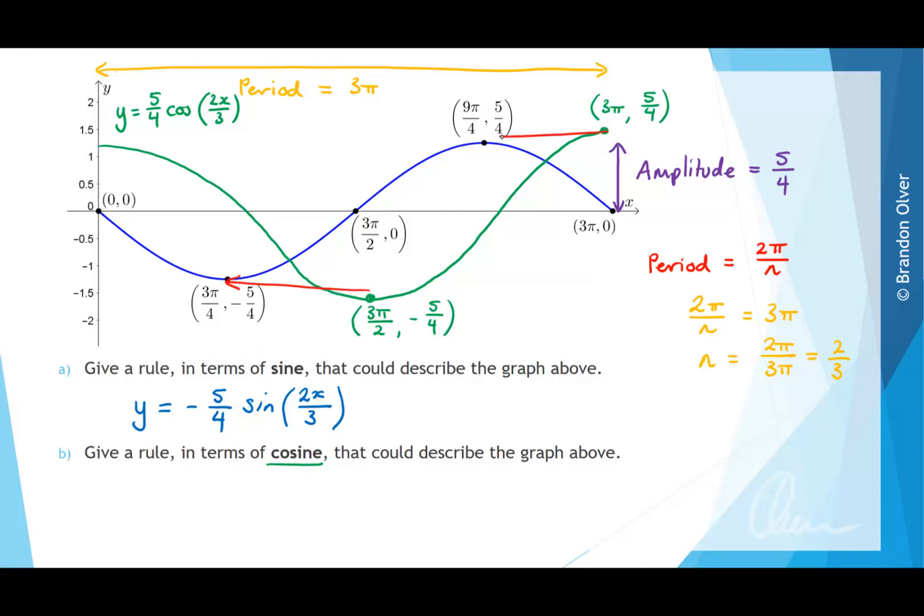So what you should start to see is that we just need to translate the graph in this direction by a certain amount. And that certain amount is the thing that we now need to find.